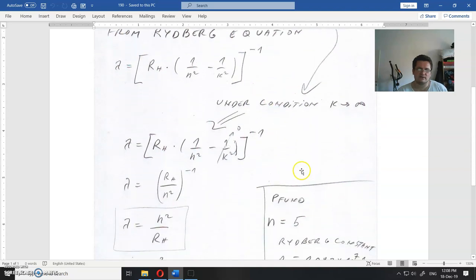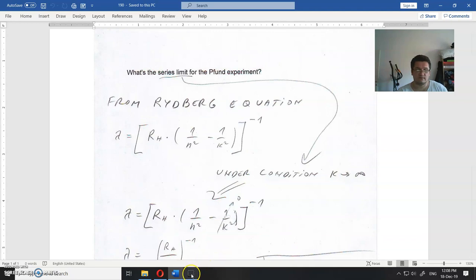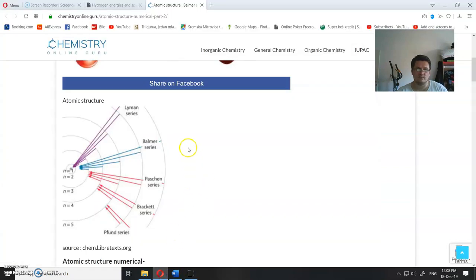And that is calculated here. Number 5 is because it's Pfund. That is the limit. When you calculate others, you don't use number 5, you use others. So for Paschen, that would be number 3. For Brackett, it will be 4. And that's all there is to it.